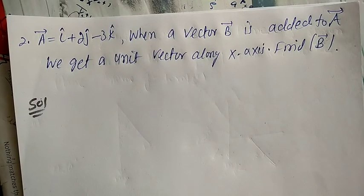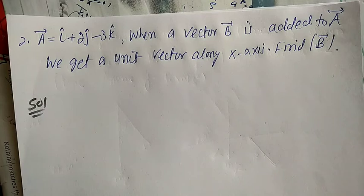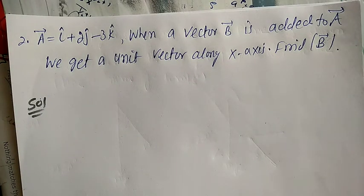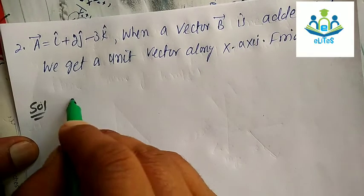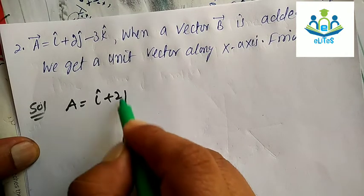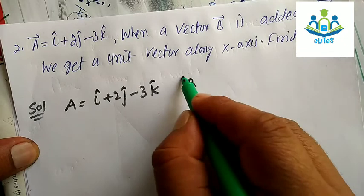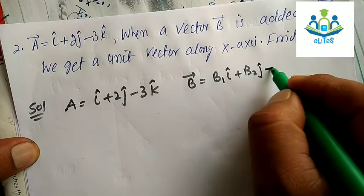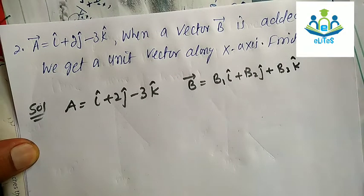Next problem: we have vector a = i cap + 2j cap − 3k cap. We need to find vector b such that when we add vector a to vector b, the result is a unit vector along the x-axis. Suppose vector b has components b1 i cap + b2 j cap + b3 k cap.